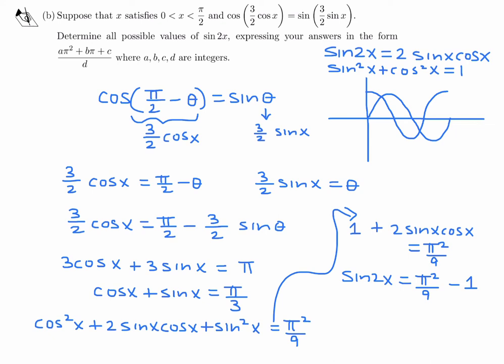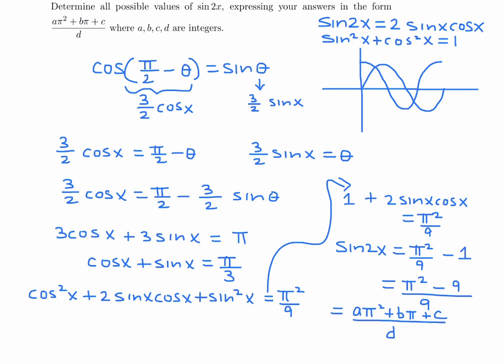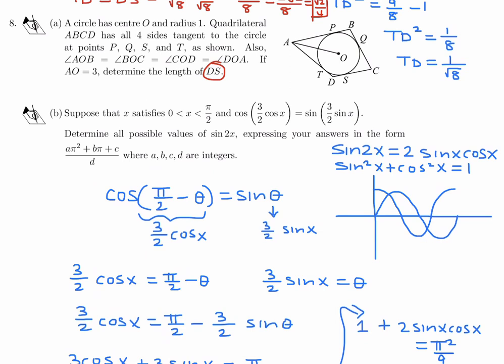For some reason they want the answer in the form (a·π² + b·π + c) / d. Getting a common denominator: sin(2x) equals (π² − 9) / 9. Matching this to the required form, a equals 1, b equals 0 (there is no π term), c equals −9, and d equals 9. That completes part 8b.